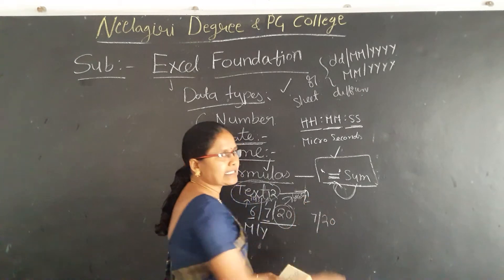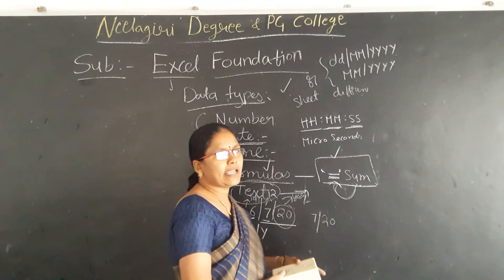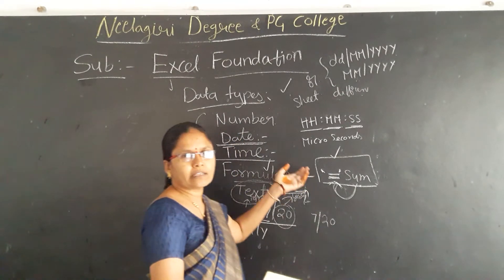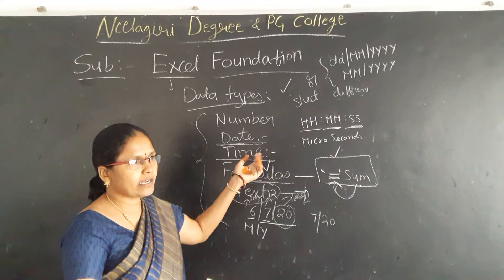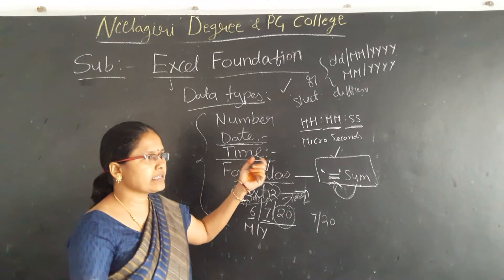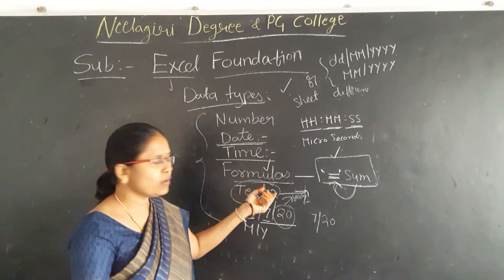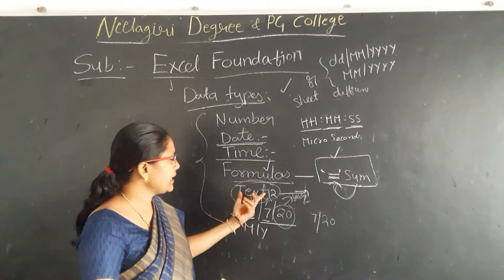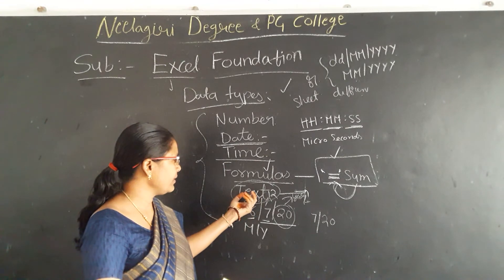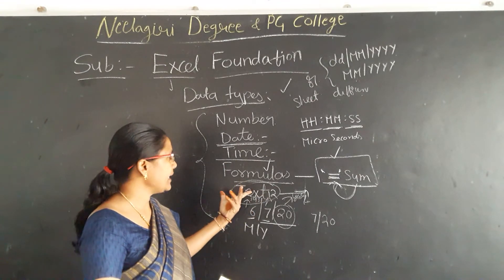Whereas text — text is nothing but the name of the student, name of the company, or the address. Whatever you want to store in that form, that type of data will be text-related data.